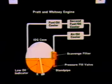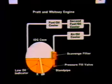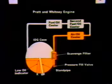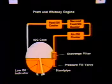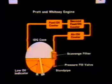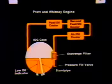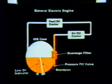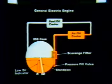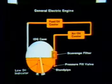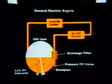In Pratt & Whitney engine applications, the IDG pumps filtered oil from the oil outlet through an air oil cooler, through two fuel oil coolers, and then through the oil inlet where it re-enters the IDG. In General Electric engine applications, the IDG pumps filtered oil from the oil outlet through an air oil cooler, through a fuel oil cooler, and then through the oil inlet where it re-enters the IDG case.